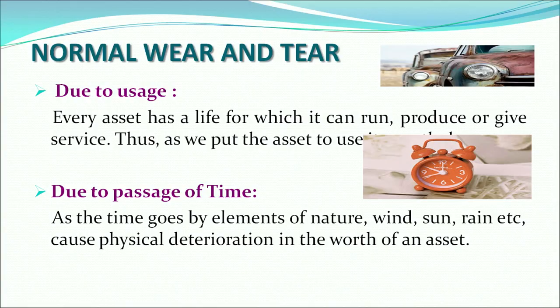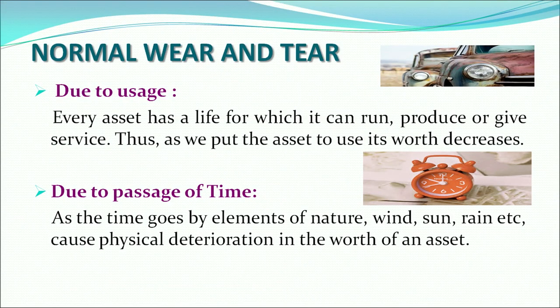Now let us understand how normal wear and tear leads to reduction in the value of the asset. It is primarily because of two reasons: first, due to usage, and second, due to the passage of time. Every asset has a particular useful life during which it gives production or services, and when we keep using it constantly over the years, there is a decline in its value. Even if the asset is lying idle, because of elements of nature — wind, sun, rain, or other physical deterioration — the value of the asset still goes down.